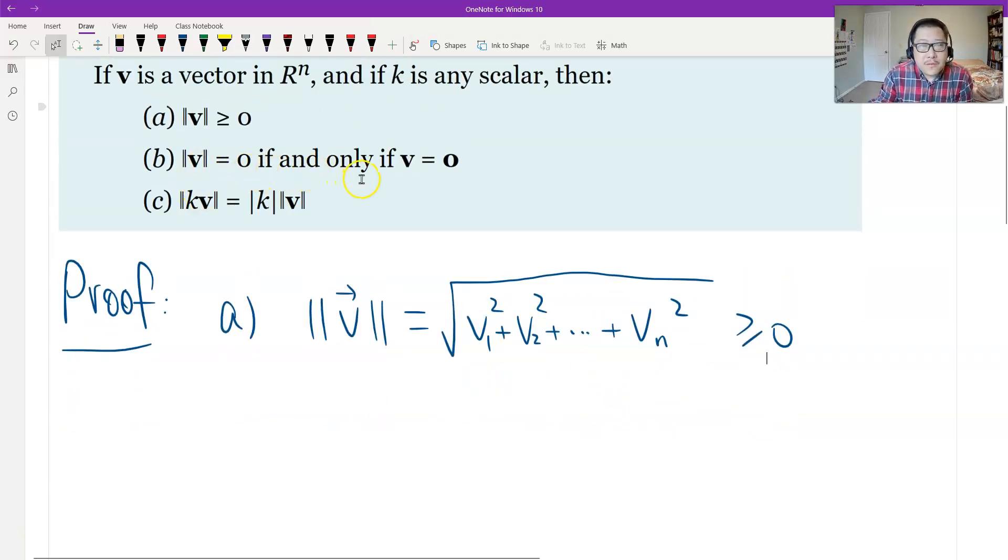And then the second one. The distance equals zero if and only if V is a zero vector.